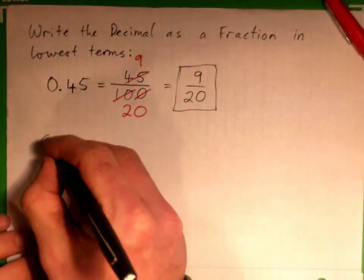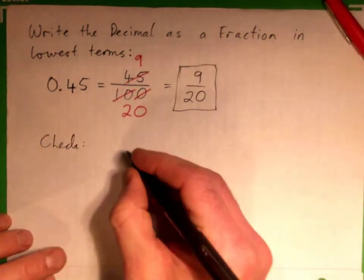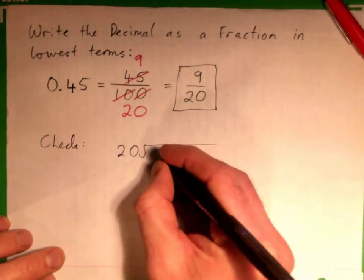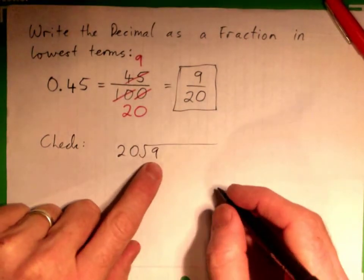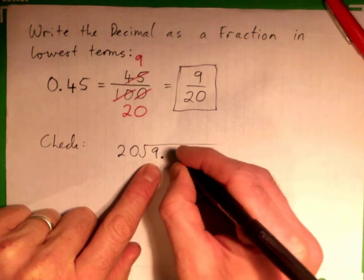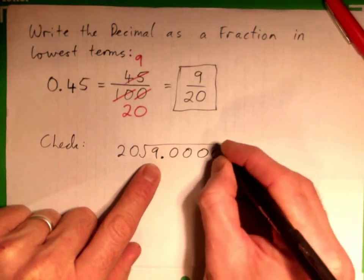Just for fun, you're not required to do this. I'm going to do this really quick. But if you were to actually check that, 20 into 9 to get it back to a decimal. By the way, 9 is 9.000.